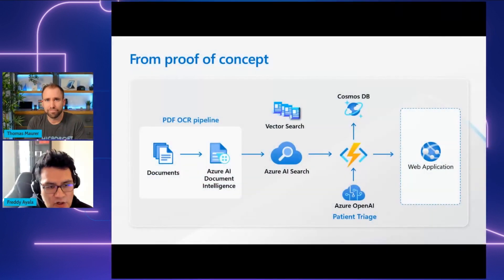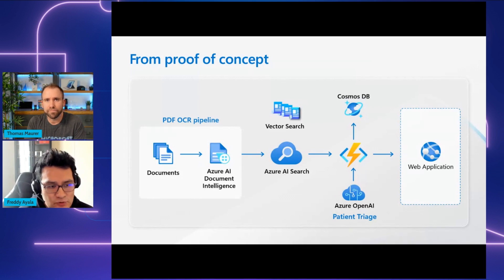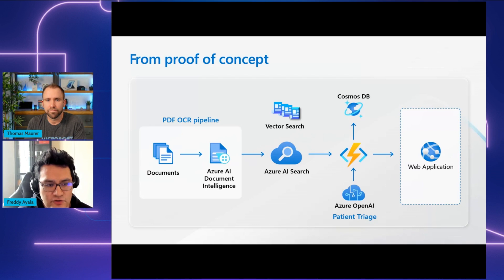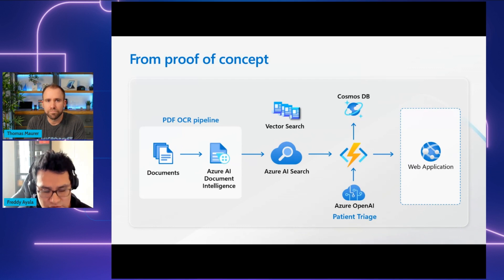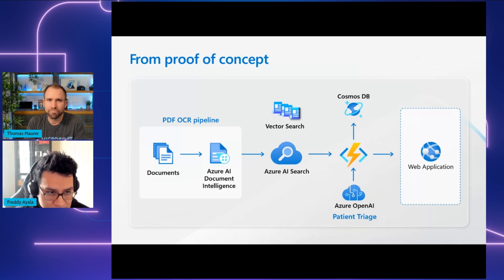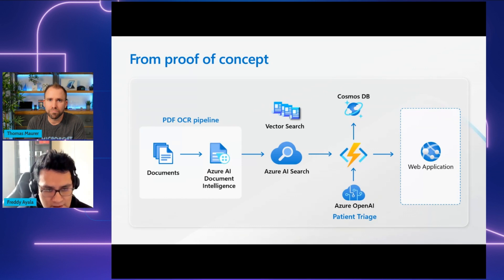Let's talk about a hospital providing emergency room services as an example. They are using this system to streamline patient triage. They use Azure Document Intelligence to scan all types of incoming patient documents — charts, notes — extracting key information such as symptoms. In these critical cases, you don't have time to read all the documentation, so everything needs to be processed at once, including analyzing previous conditions.